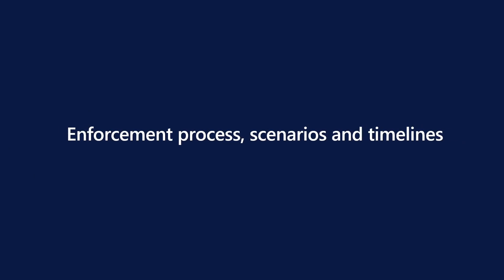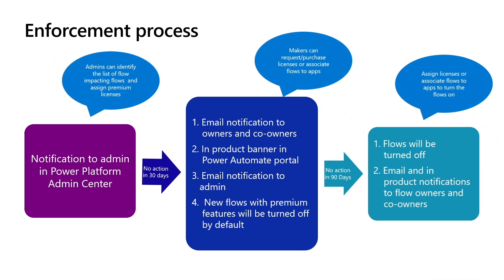Enforcement process scenarios and timelines — this is the enforcement process for most impacting scenarios except a few exceptions. When we initiate a new enforcement, we send a notification to admins in the Power Platform admin center. If no action is taken for 30 days, we send an email notification to owners and co-owners, display an in-product banner in the Power Automate portal, send an email notification to admins, and new flows with premium features will be turned off by default.